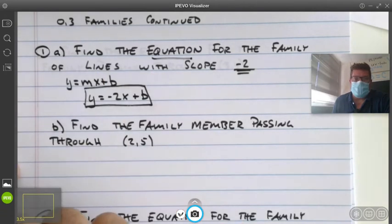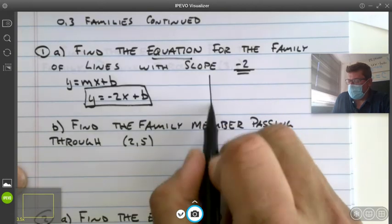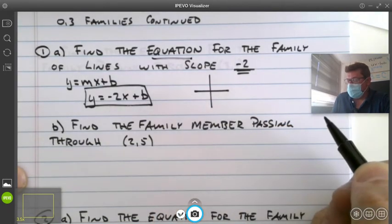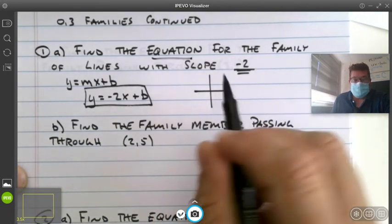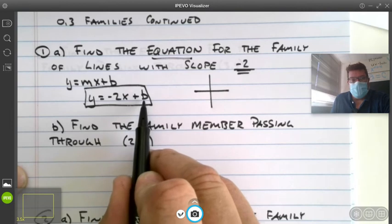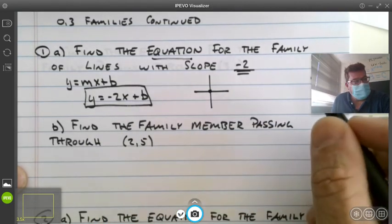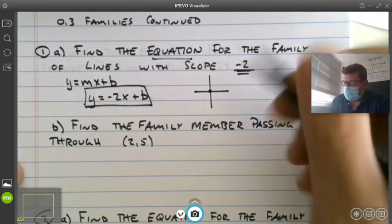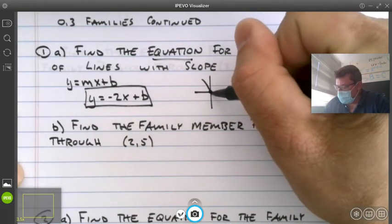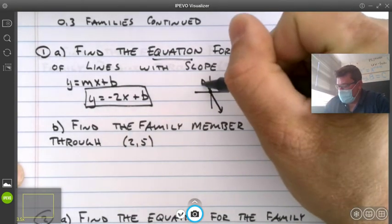Let's draw this family portrait. What would this family portrait look like? The y-intercept can be anything you want. Let's say the y-intercept is the origin. Then the slope would be negative two. It falls as you read it from left to right. There's one family member.